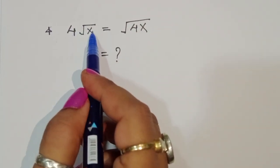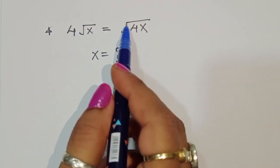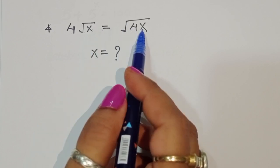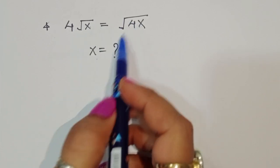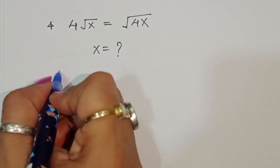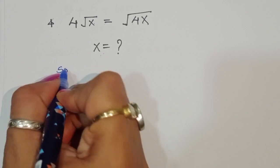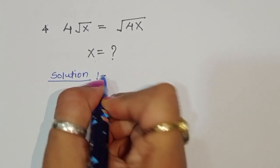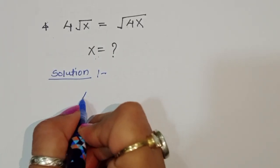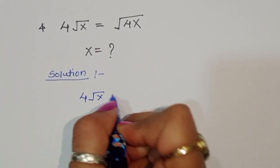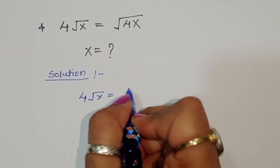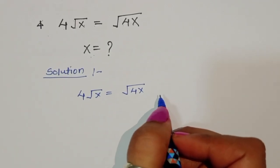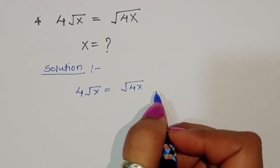Given 4√x is equal to √(4x), we have to find out the value of x. Let's see the solution. This is the question, so we have to solve for x.